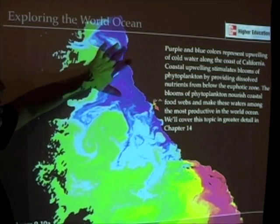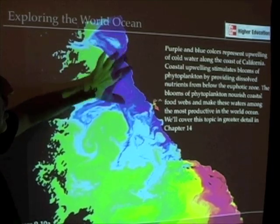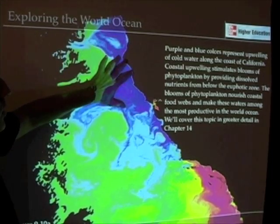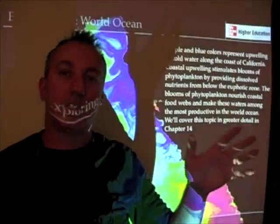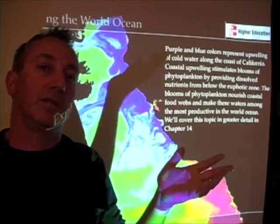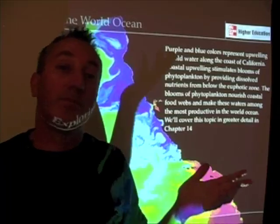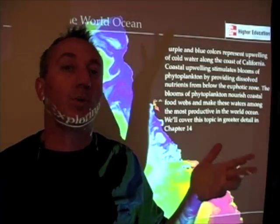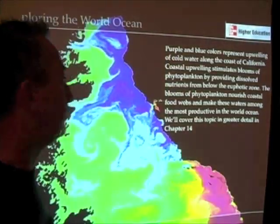A north wind blowing creates upwelling off the coast of California, and as we'll discuss in Chapter 14, this has enormous implications for productivity off the coast of California and for how food webs operate.